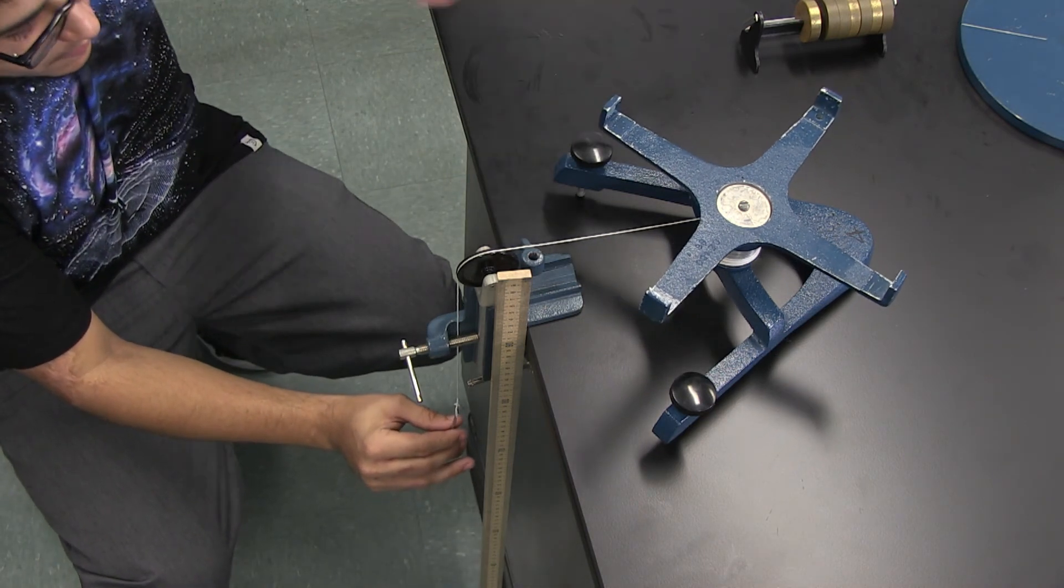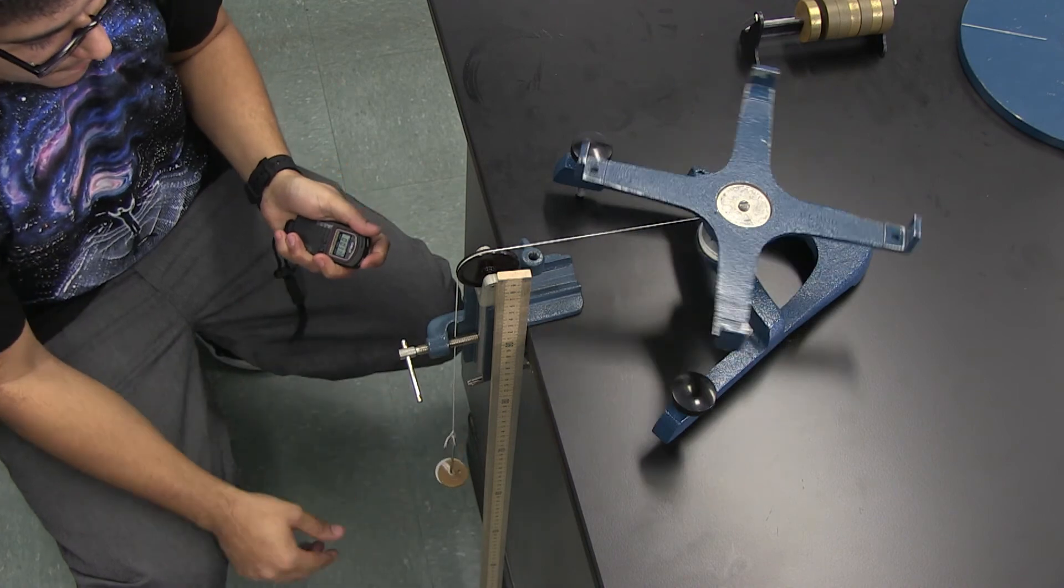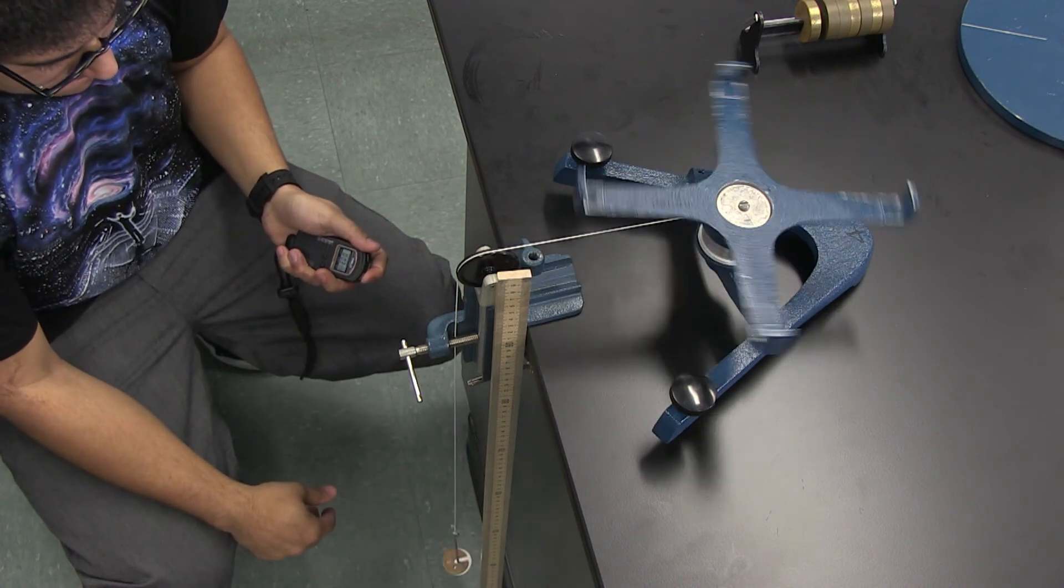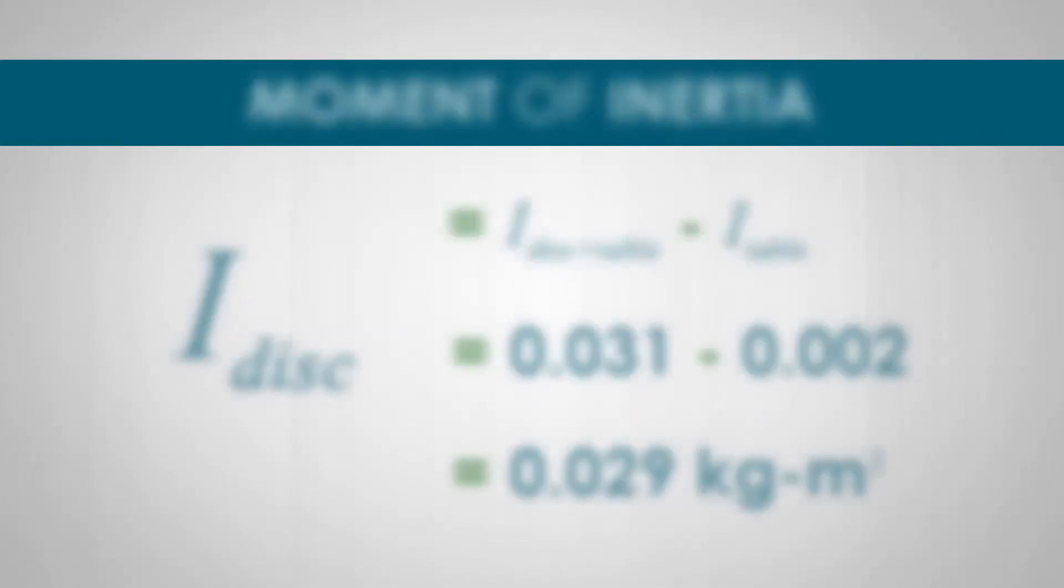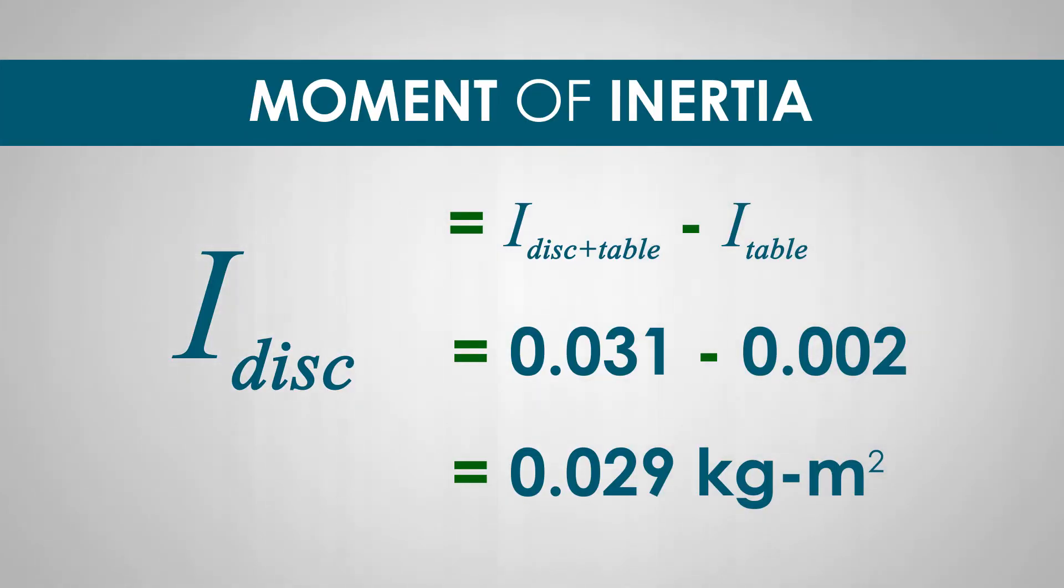Using the exact same procedure, moment of inertia of the table alone turns out to be 0.002 kilogram meter squared. Since the moment of inertia of the disk and the table together is 0.031 kilogram meter squared and that of the table alone is 0.002 kilogram meter squared, the moment of inertia of the disk is just the difference between the two: 0.029 kilogram meter squared. And that is our result.